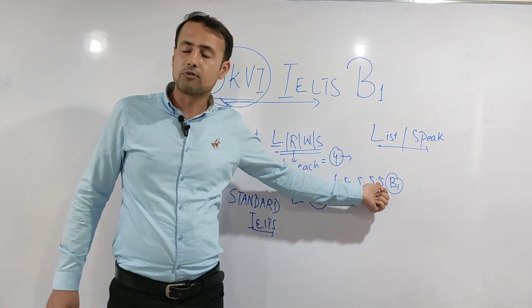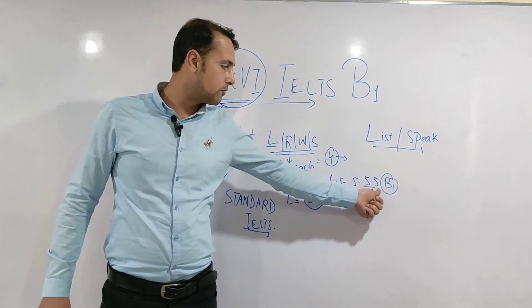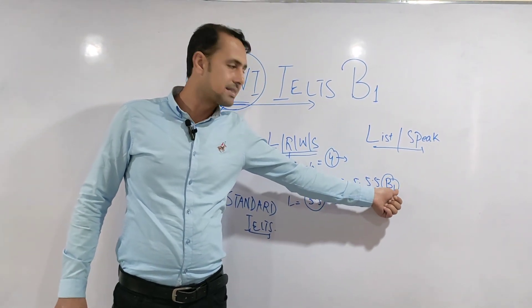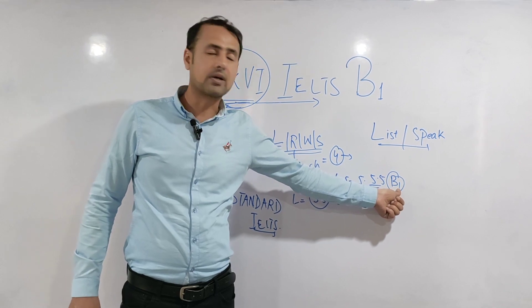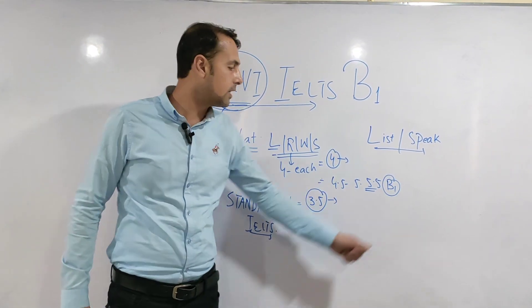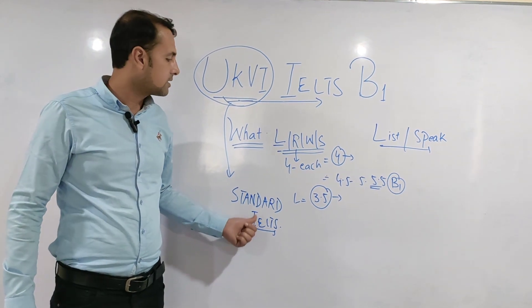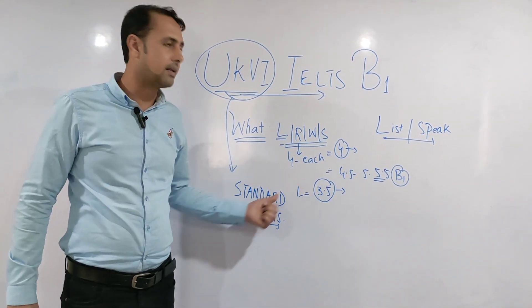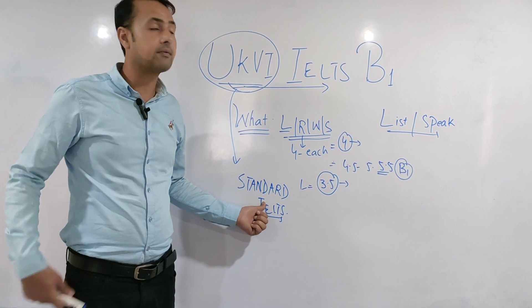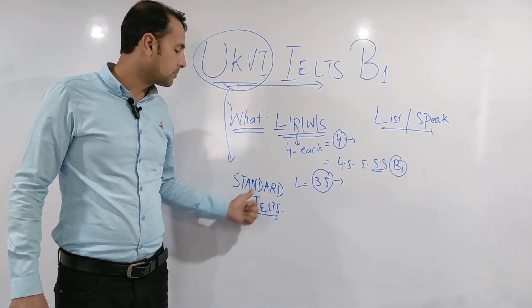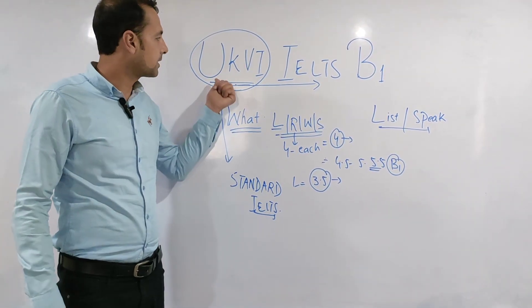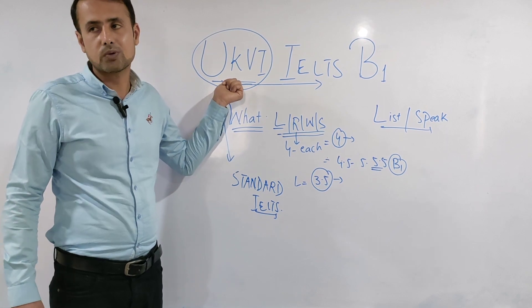6 and 6.5 would be B2 level. If he or she scores in standard IELTS something beyond B1 level - B2 or even C1 - it won't be acceptable. Why? Because their requirement is UK IELTS.